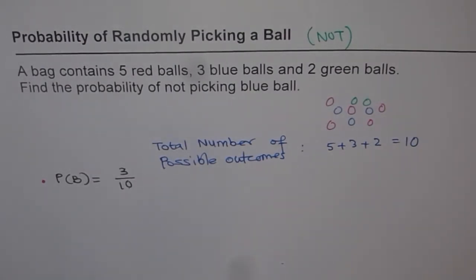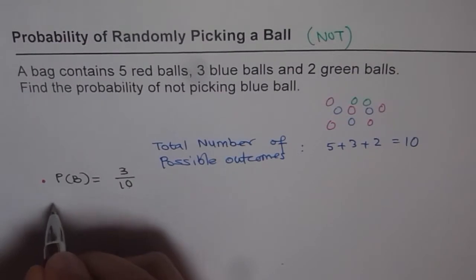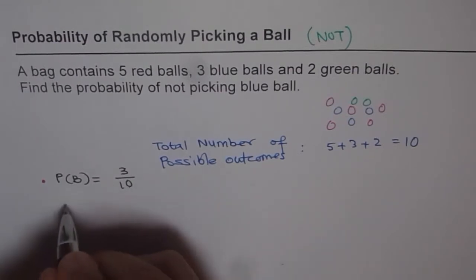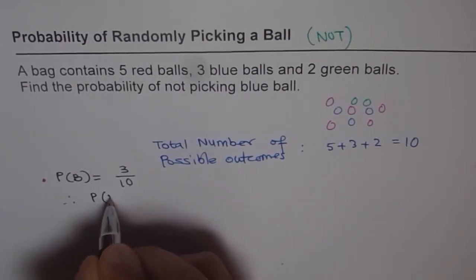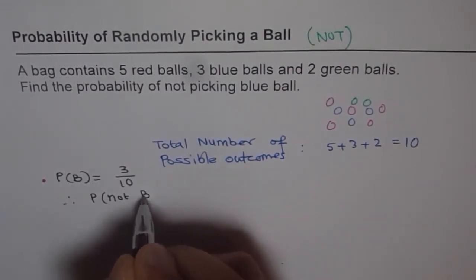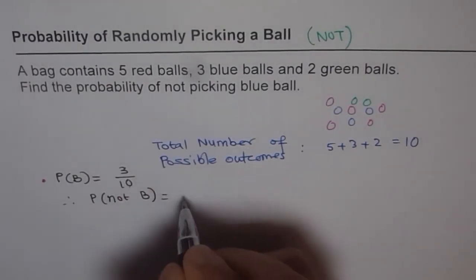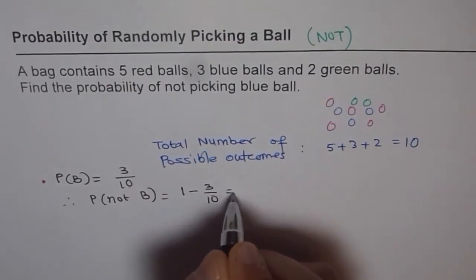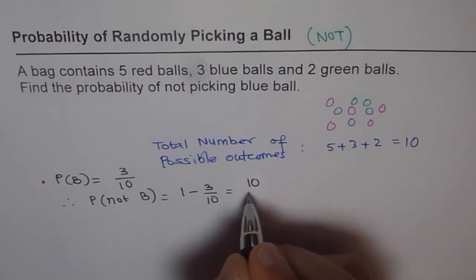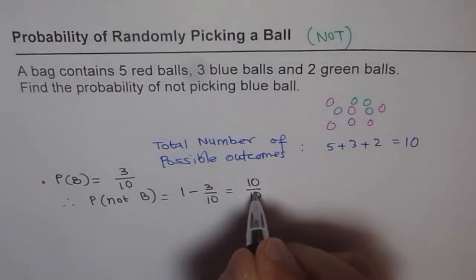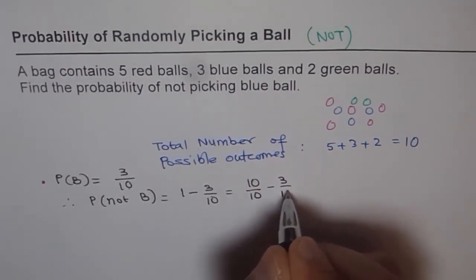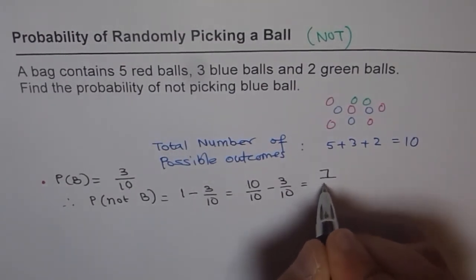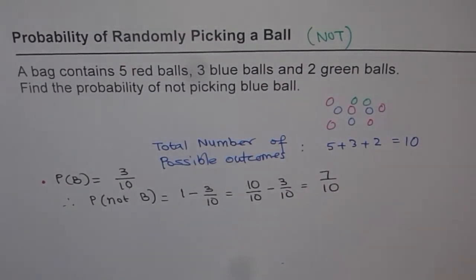But what we want is the probability of not picking blue. So probability of not blue is one minus three over ten. That gives us ten over ten minus three over ten, and that is seven over ten. So that is our answer for the given question. This is one way of doing it.